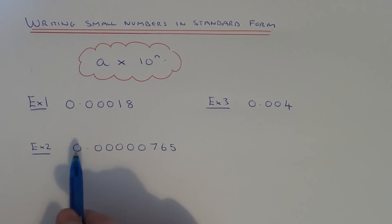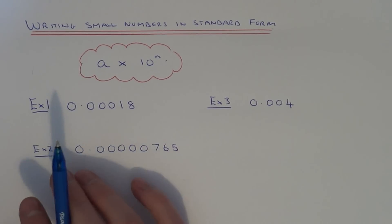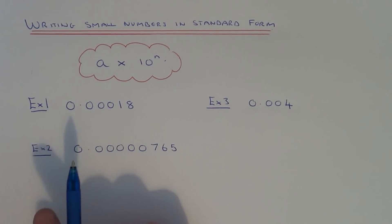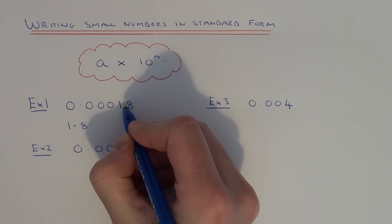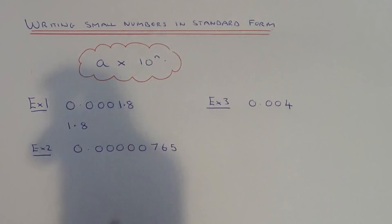So let's have a look at example 1. We've got 0.00018, so make the first number between 1 and 10, so we're going to make it 1.8. We're putting our decimal point here.